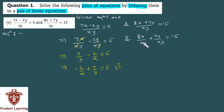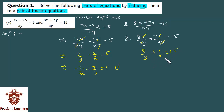Likewise, if we solve the second equation, the x-x term cancels and the y-y term cancels. So you will get 8 over y plus 7 over x is equal to 15. You can write this as 7 upon x plus 8 upon y is equal to 15.